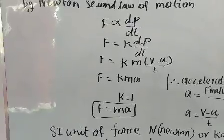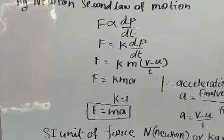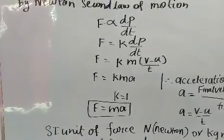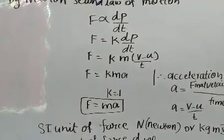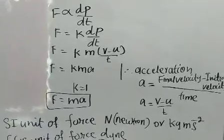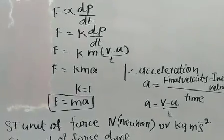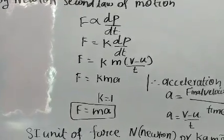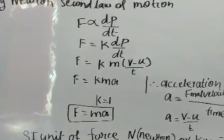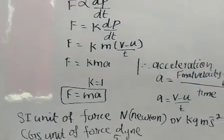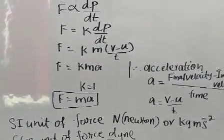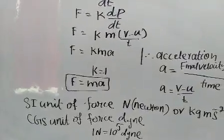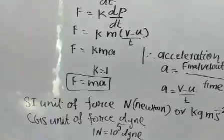With the help of this equation, we can obtain the magnitude or amount of force acting on the body. The SI unit of force is Newton, or kg·m·s⁻². This unit kg·m·s⁻² is obtained from the equation F = MA: mass in kilogram, acceleration in m·s⁻². The CGS unit of force is Dyne. 1 Newton is equal to 10⁵ Dyne.